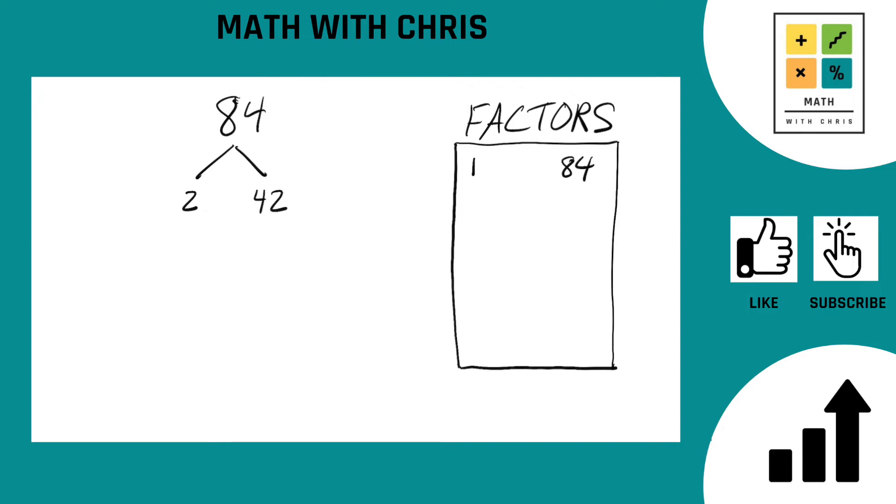So 2 is a prime number, we can circle that, 2 is done. What about 42? We can break down 42 into two numbers that multiply to give us 42. There's a couple options here. Let's go with 6 times 7.